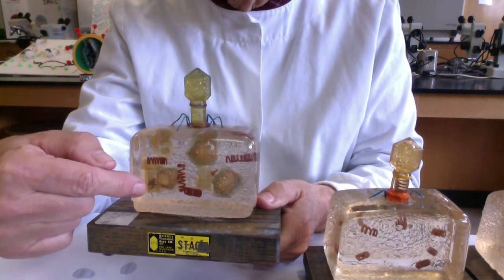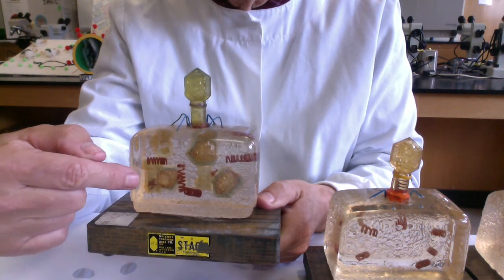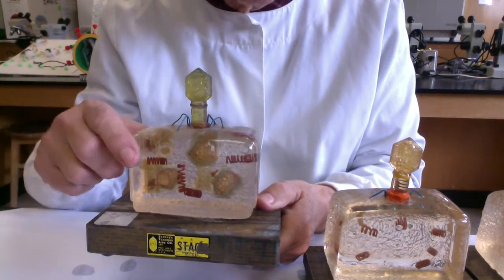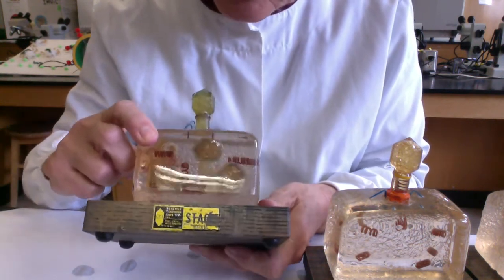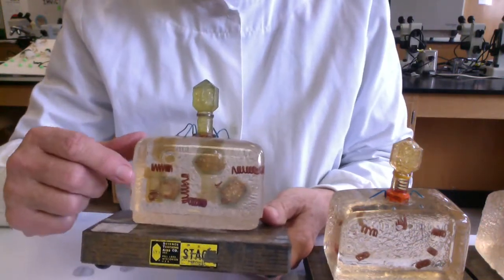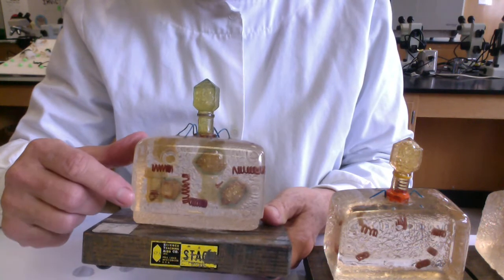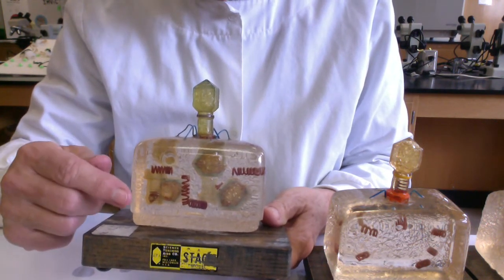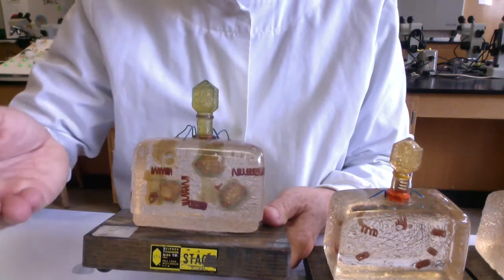So most of the phage heads, the phage capsids, will get packaged with phage DNA. Furthermore, to make this crazy, it's hard to see here in this little model, but there would be the protein tails, the sheath and collar, and the tail fibers. Once the phage DNA is packaged into the capsid, the tail will self-assemble. It will join the capsid to make the mature virus particle.